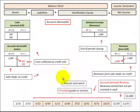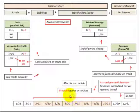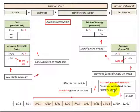So first, let's look at exactly what accounts receivable is. If we look at the timeline here, I've got March through October highlighted. Say we provided some goods or services in that time period — we've accrued or earned some revenue from those goods or services provided. The revenues were earned but not yet received in cash; they're sitting in the accounts receivable account.